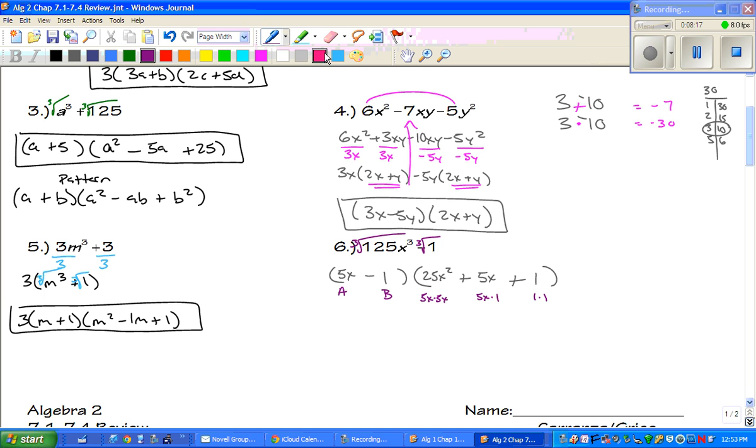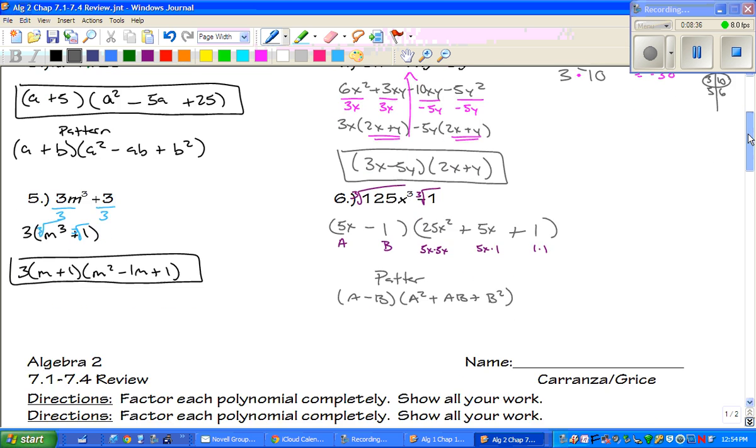I'll write the pattern down for this one, too. 5x times 2, a minus b, a squared, plus ab, plus b squared. Alright, let's flip it over.